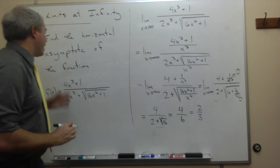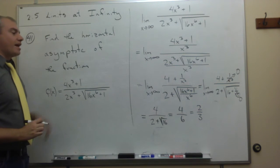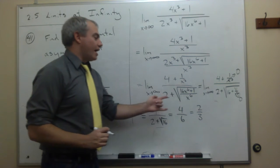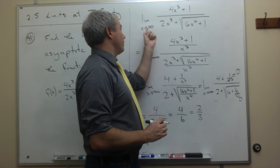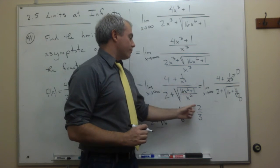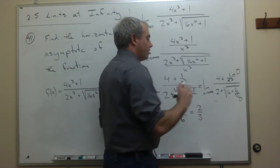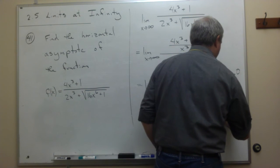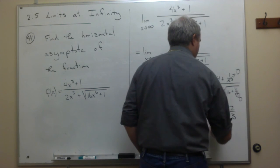And if I want to write this as a horizontal asymptote — as x approaches infinity, this function approaches 2/3. So the answer is y = 2/3, and that is the horizontal asymptote.